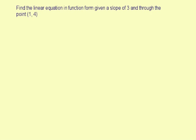Find the linear equation in function form given a slope of 3 and through the point (1, 4). This is a point-slope situation — we're given a point and a slope, so we're going to use the point-slope formula. We'll write that first.